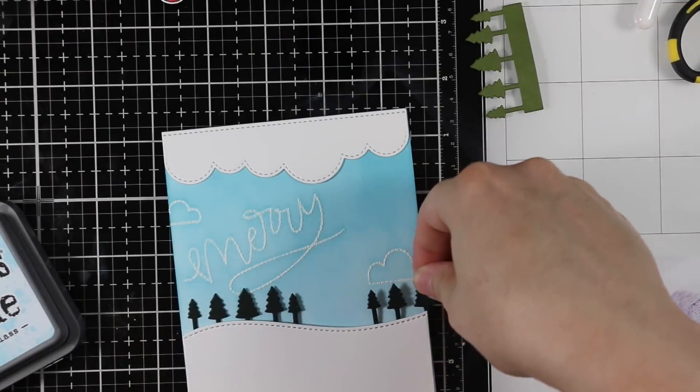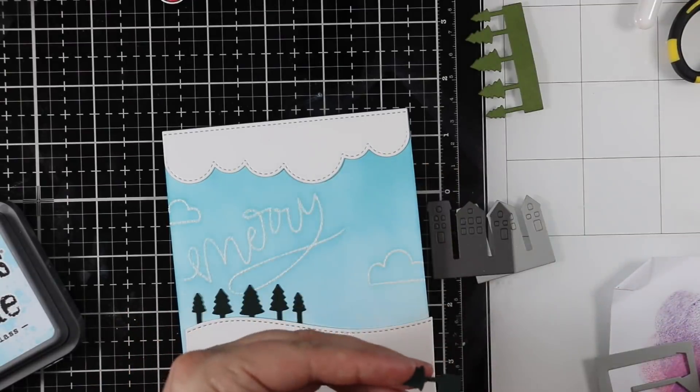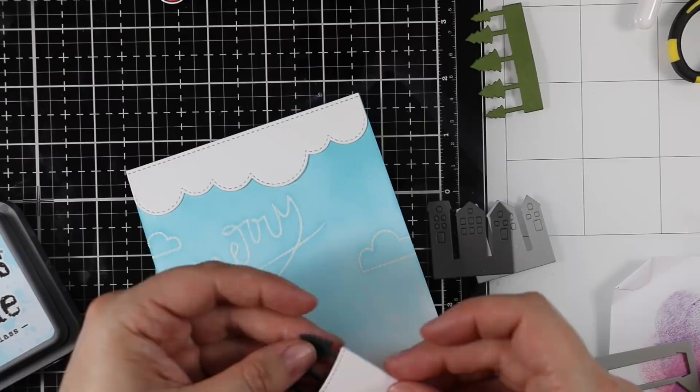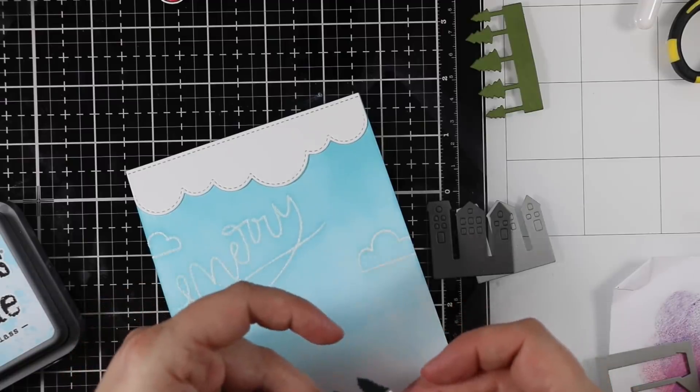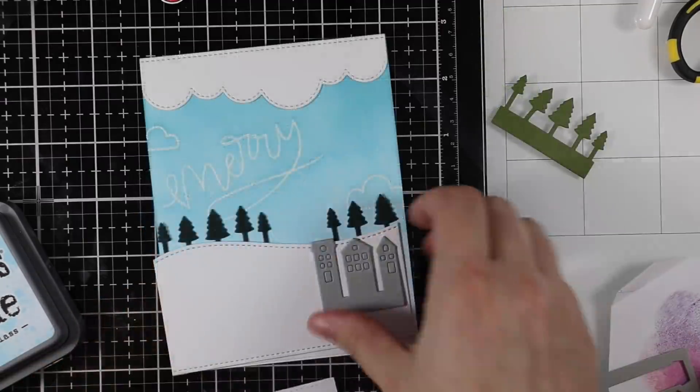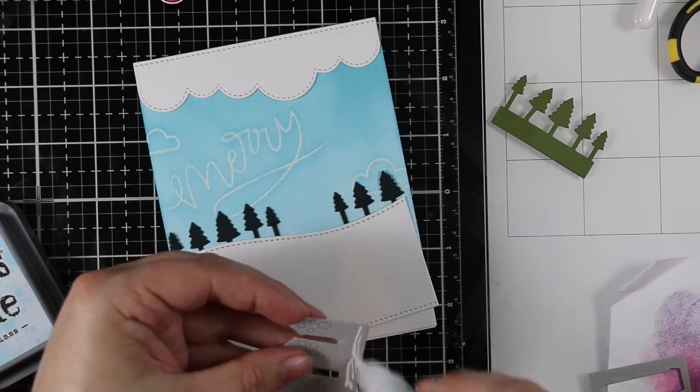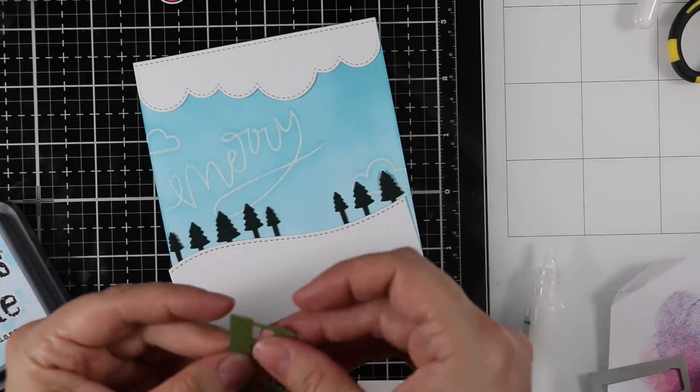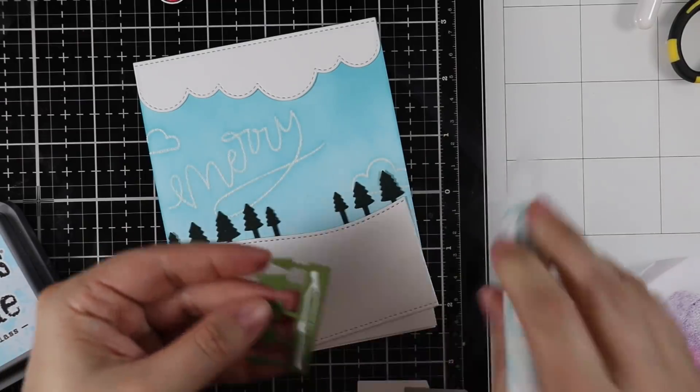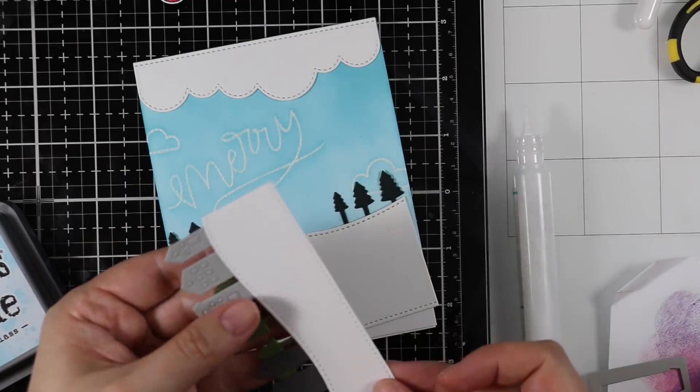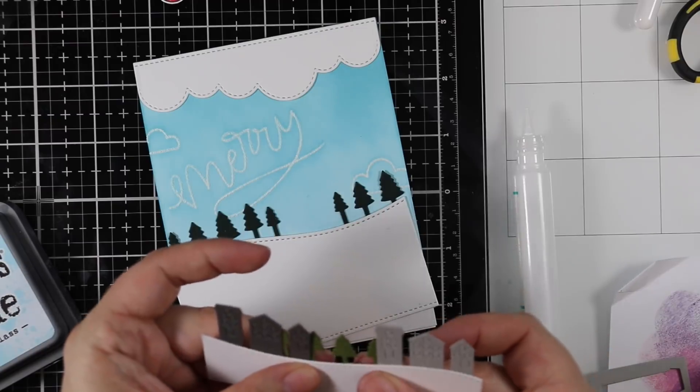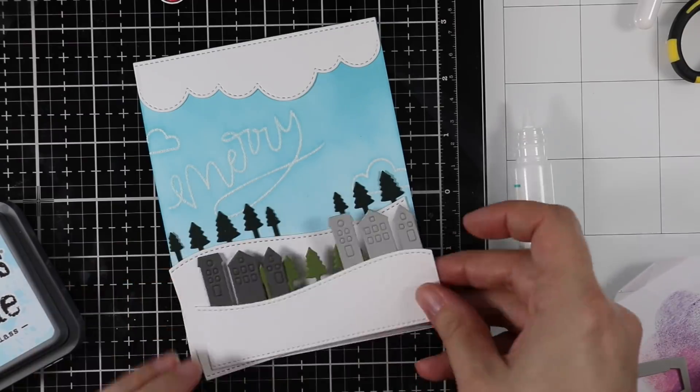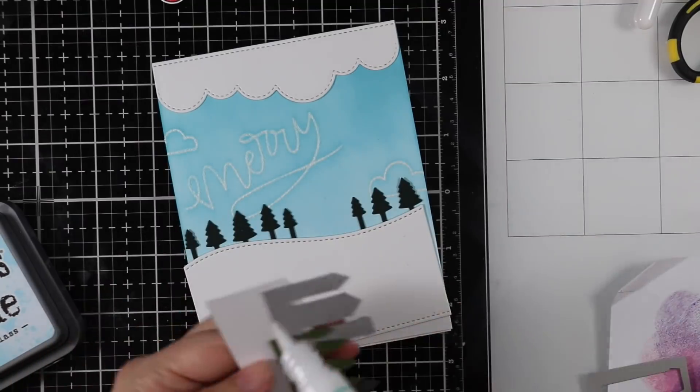I die cut the darker green from some Simon Midnight Green cardstock, and then the lighter green is from a Gina K autumn rainbow pack, the Fresh Asparagus green. The gray buildings I die cut from scraps of gray cardstock—Simon Smoke and Slate cardstocks. I'm adhering them onto these white cardstock hills I die cut with the same die set.